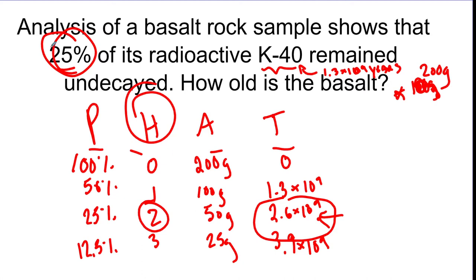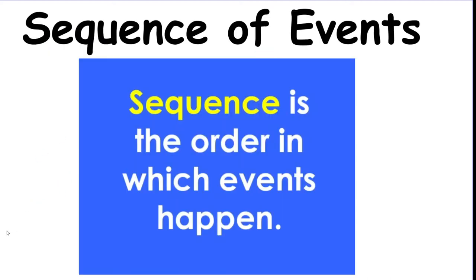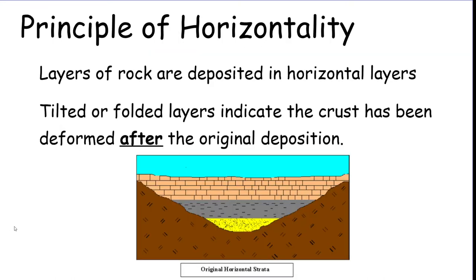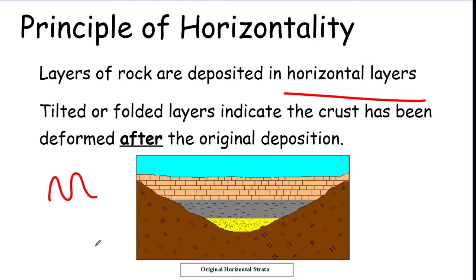The next topic is relative age — what happened first. For relative dating, all layers must be deposited in flat, horizontal layers. If they were folded or tilted on an angle, that had to happen after they were deposited. This is the principle of horizontality.